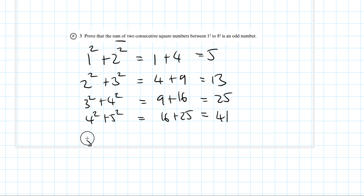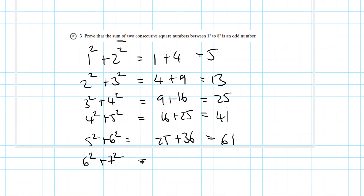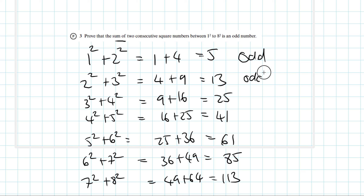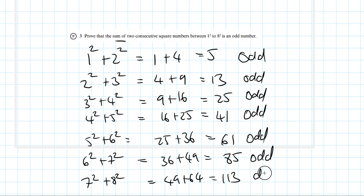Continuing: 5²+6² = 25+36 = 61. You're always adding an odd and an even number together, so you always get an odd number. 6²+7² = 36+49 = 85. Then 7²+8² = 49+64 = 113. We can see that these are all odd numbers, so we have proven that the sum of two consecutive square numbers between 1² and 8² is always odd.